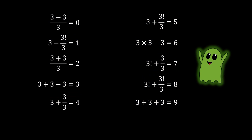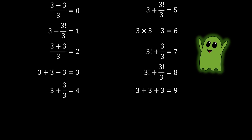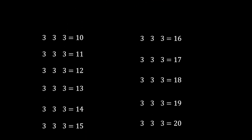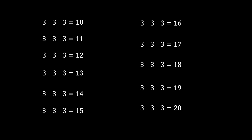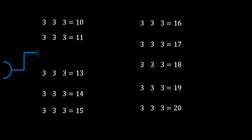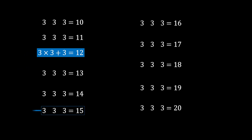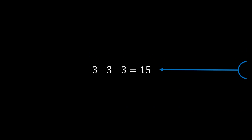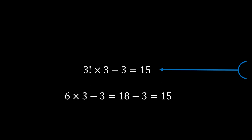Now we'll solve the two-digit numbers from 10 to 20 using only three 3s. Starting with the easiest — number 12: 3 × 3 + 3 = 9 + 3 = 12. Next, number 15: 3! × 3 − 3 = 6 × 3 − 3 = 18 − 3 = 15.